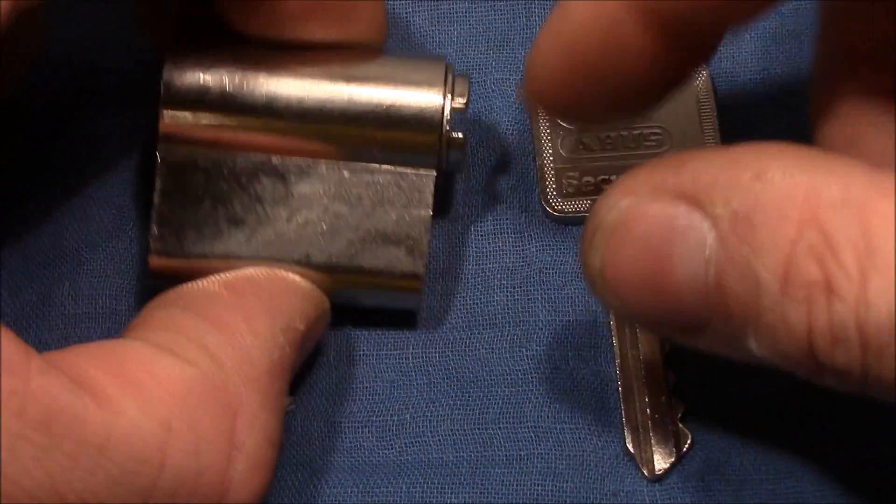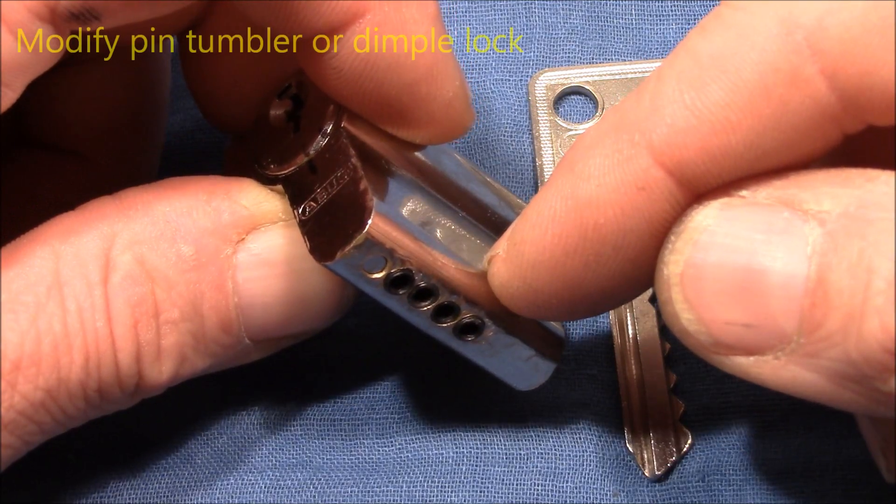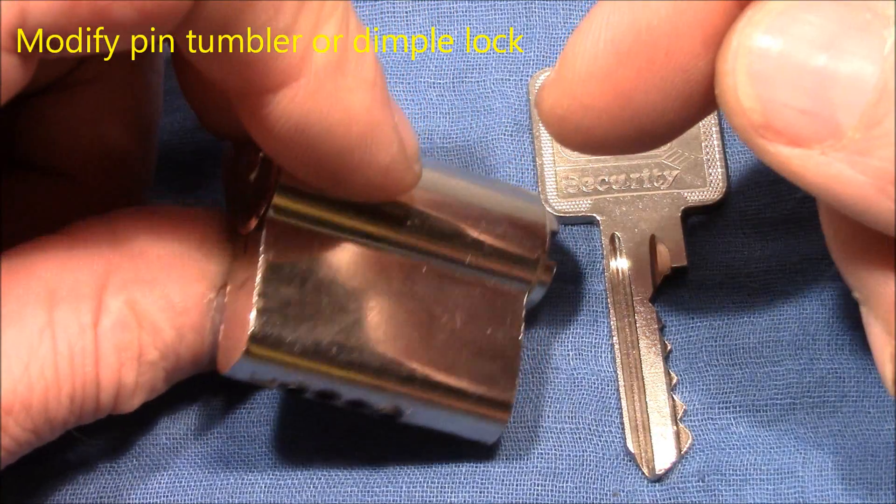So here are the rules. You can take any pin tumbler or dimple lock you like - five, six, or seven pins. Doesn't matter.